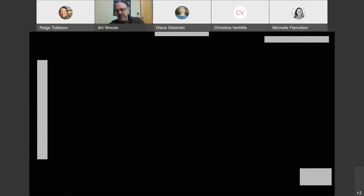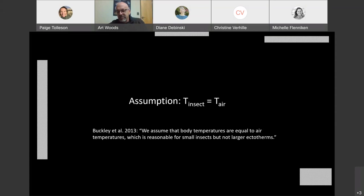I'm going to spend the next few minutes tearing down one key pillar of this argument. I want to show you a quote that sets up where I'm going. I would say that the essential assumption of these modeling efforts and most of the ways that people think about insects interacting with climate is that the temperature of the insects is equivalent to the temperature of the air. Here's a representative quote from a paper by Lauren Buckley whose work I love, but I think she's wrong about this statement in a really profound way. We assume that body temperatures are equal to air temperatures, which is reasonable for small insects but not larger ectotherms.